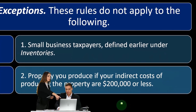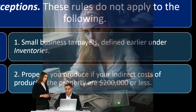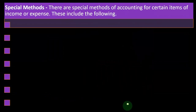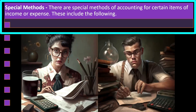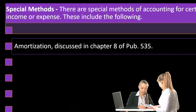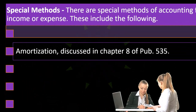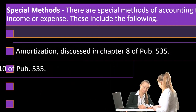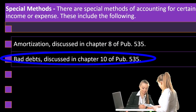So special methods — there are special methods of accounting for certain items of income or expense. These include the following: amortization, discussed in chapter eight of Publication 535; and bad debts, discussed in chapter ten of Publication 535.